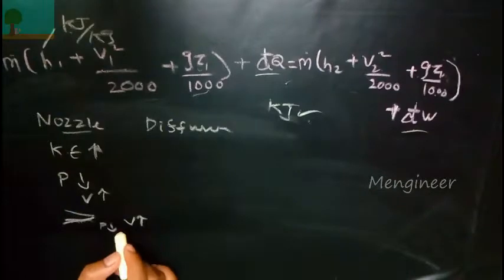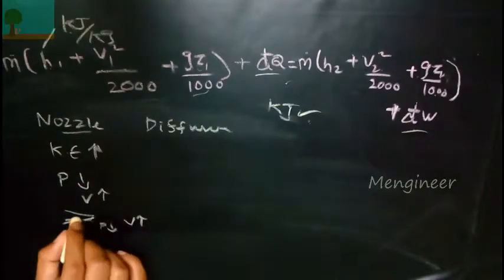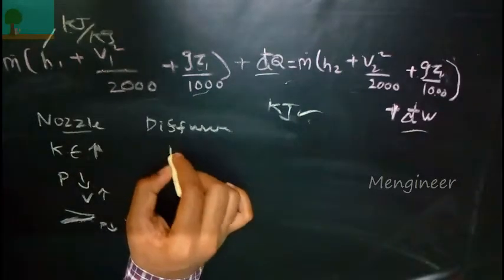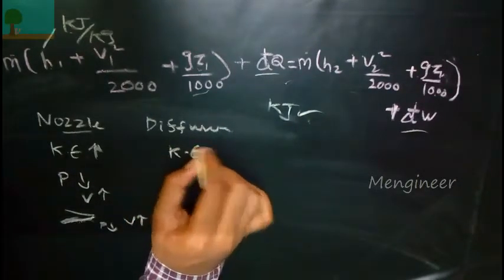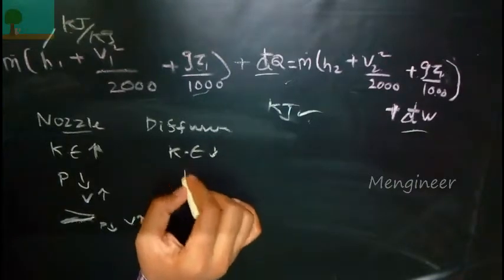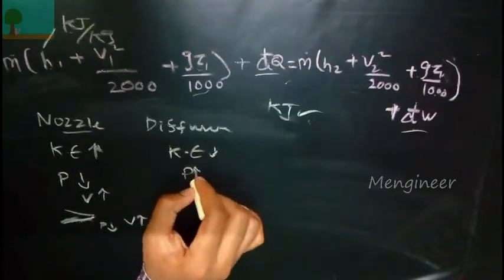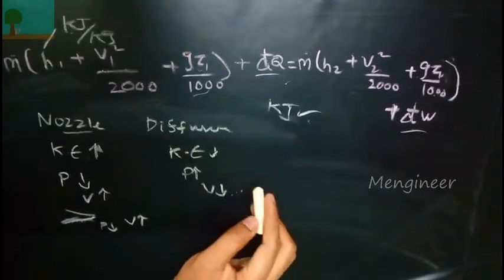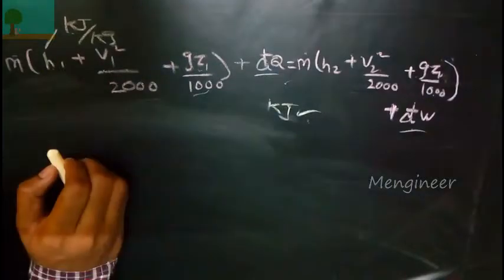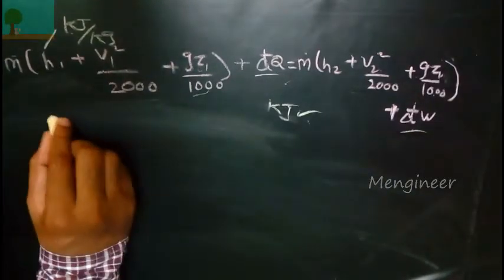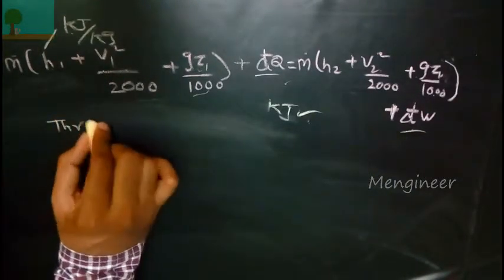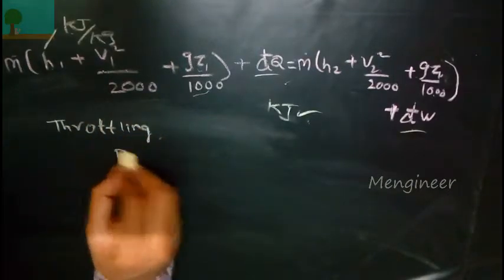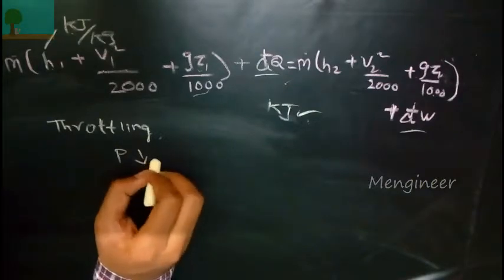The diffuser is just opposite to the nozzle. Here the kinetic energy will be minimum, so it is used to reduce the velocity at the outlet. If the velocity is reduced, the pressure will be increased. These two are mostly proportional. Generally we will be asked for finding the v2 velocity for nozzle and diffuser.